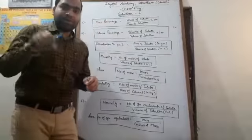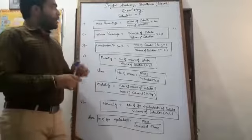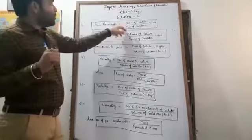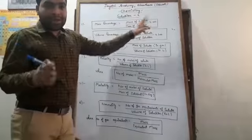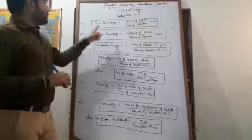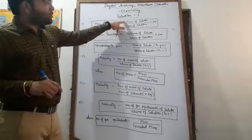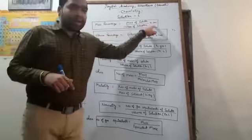Mass percentage means the mass of solute that is present in 100 gram of solution. So the mass of solution can be calculated by adding mass of solute and mass of solvent. The formula that is given over here to calculate mass percentage is mass of solute upon mass of solution multiplied by 100.